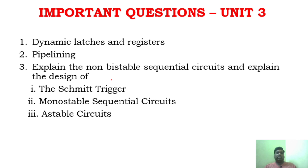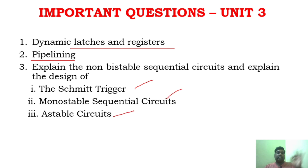Unit 3 is a relatively easier unit — it is easy to learn. Dynamic latches and registers are very important questions. Pipelining is another important question in this regulation. Schmitt trigger, monostable sequential circuits, and bistable sequential circuits are also important. In the previous regulation, Schmitt trigger and monostable sequential circuits were very frequently asked questions.